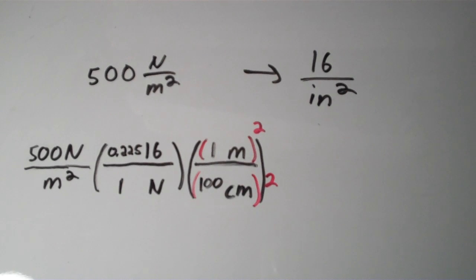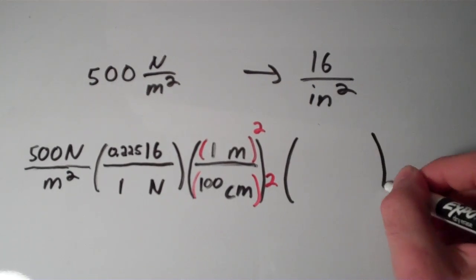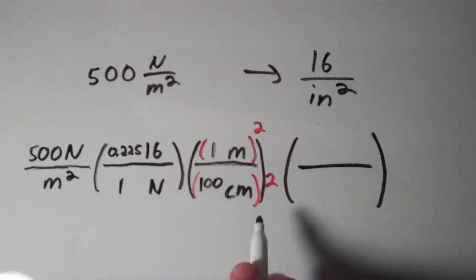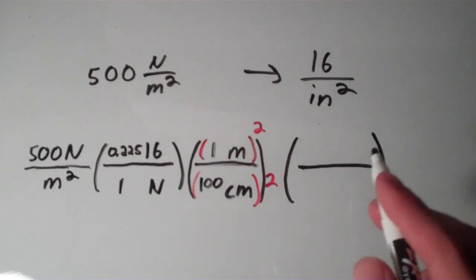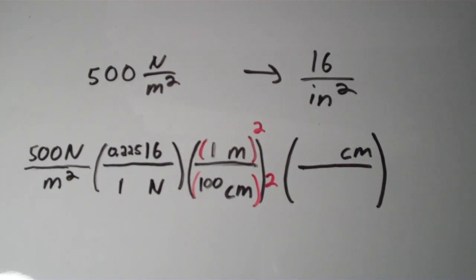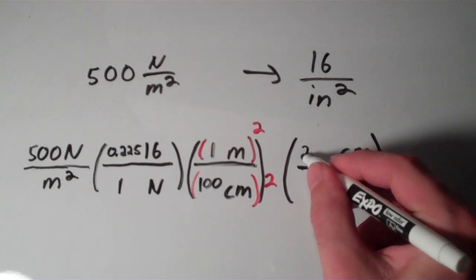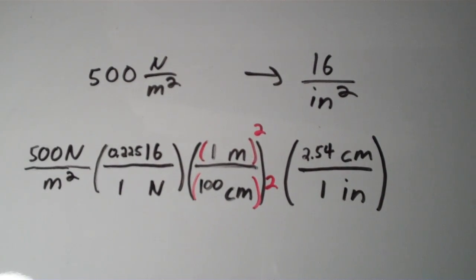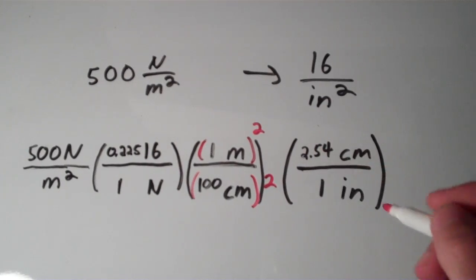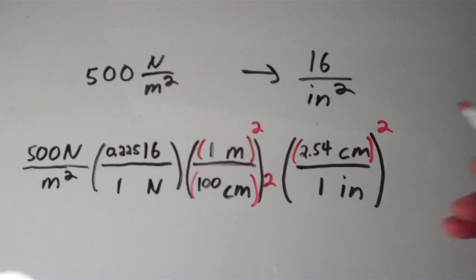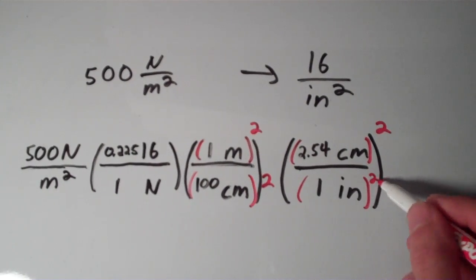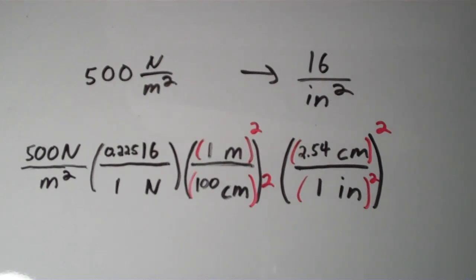The problem asks for square inches, not square centimeters, so we set up one final conversion factor. We have square centimeters and need inches on the bottom, so we put centimeters on top to cancel, and inches on the bottom. For every one inch, there are 2.54 centimeters. Since we have square centimeters, we square this conversion factor as well — squaring the 2.54 centimeters and the one inch. That's important: any time units are raised to a power, you raise both the number and the unit to that power, not just the unit.